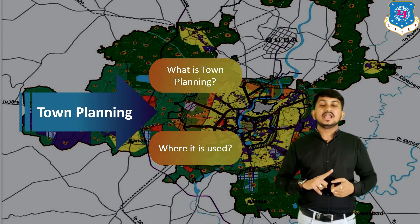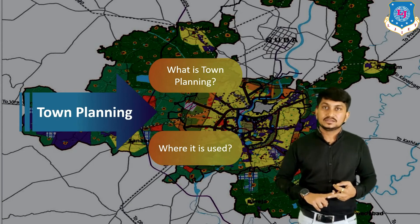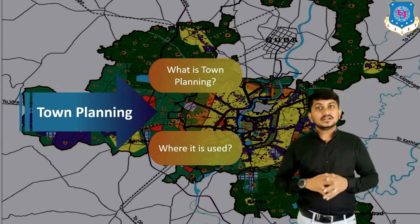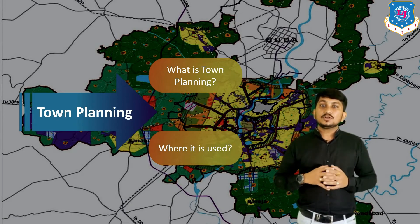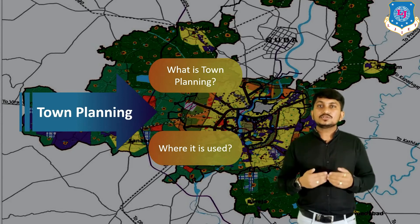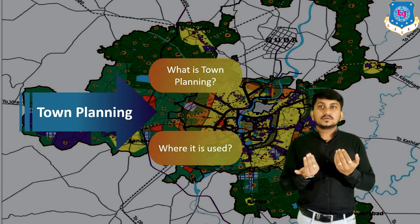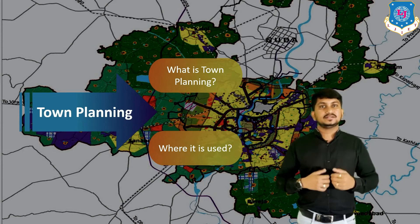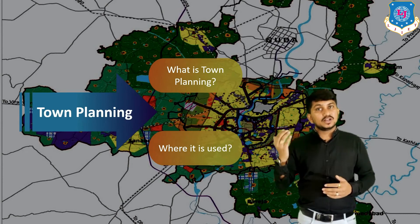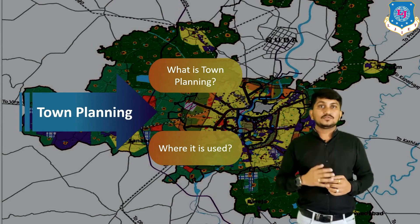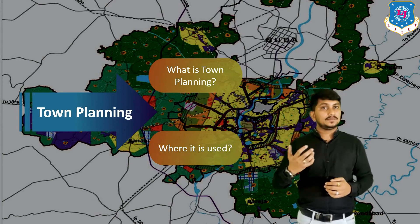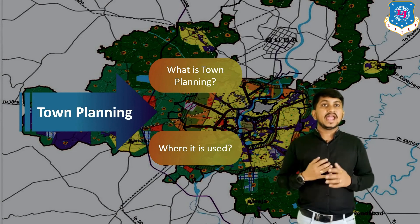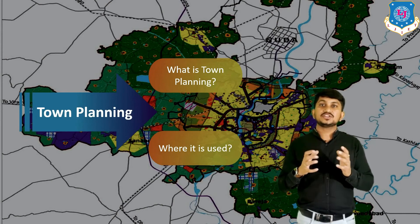These four objectives — beauty, convenience, environment, and health — need to be considered while town planning. Town planning includes zoning of land, planning of road networks, planning of water supply and drainage, preparation of a master plan of the town, and preparation of construction regulations in the town.